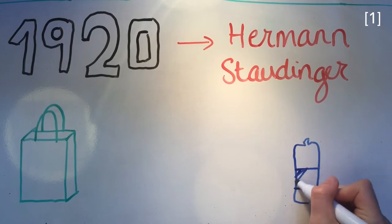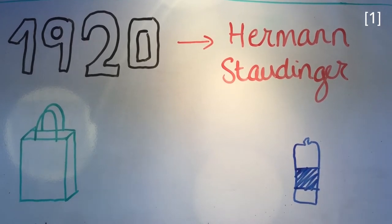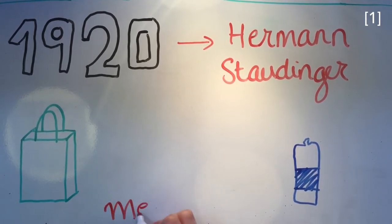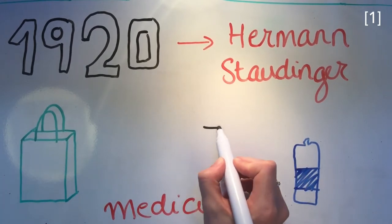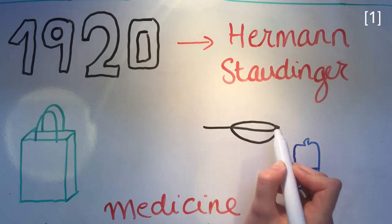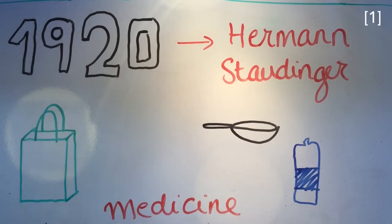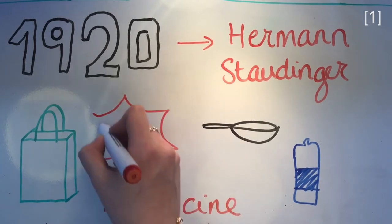The idea of polymers was proposed in the 1920s by Hermann Straudinger. Today they are used in almost everything from shopping bags to water bottles, to clothing, to kitchen utensils, to medicine and even in explosives.